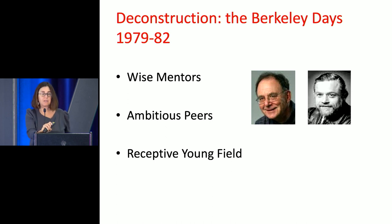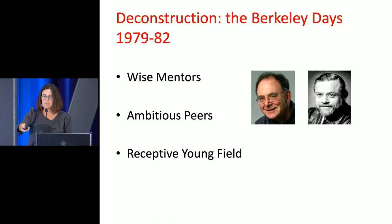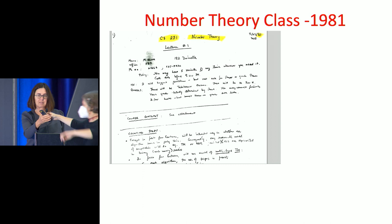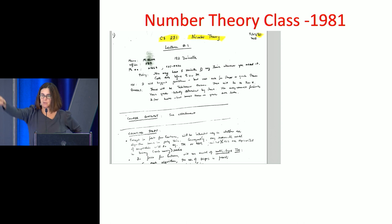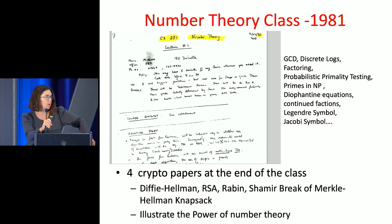I was a graduate student at Berkeley between 1979 and 1982, and it was really kind of glorious days. We had these very wise mentors, Dick Karp and Manuel Blum, and very ambitious peers — my fellow graduate students. It was a very young field — the whole of computer science. In particular, there was a number theory class that Manuel Blum taught, and the whole class was about essentially algorithmic number theory: discrete logs, factoring, primality testing, things of that sort.